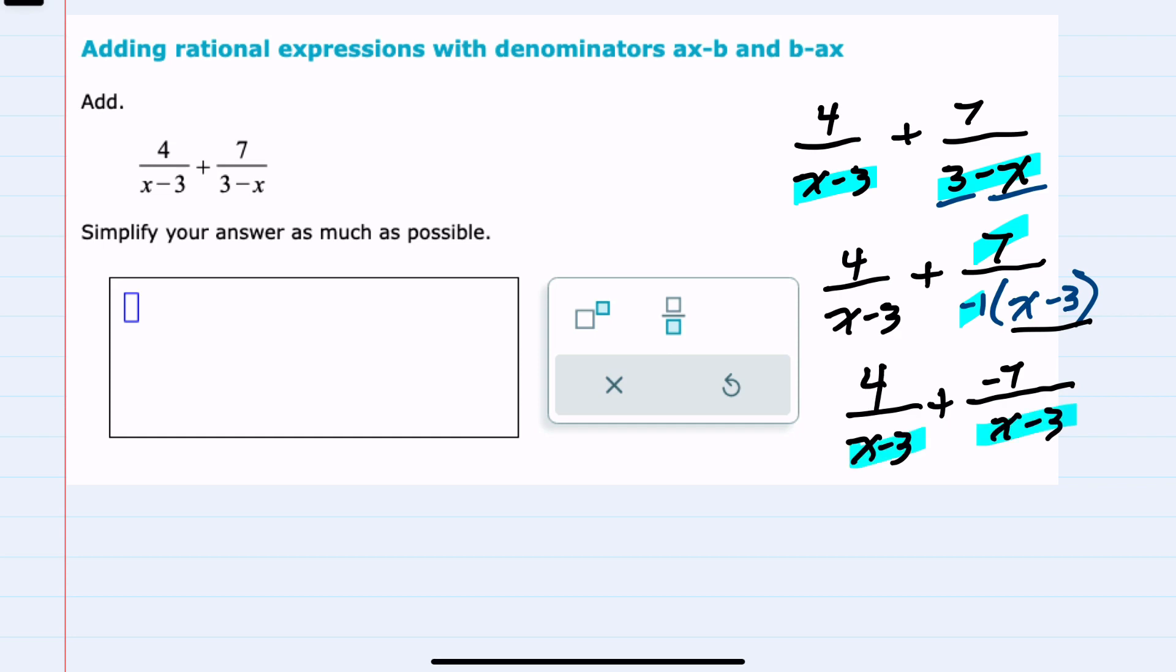We can combine these into a single fraction with x minus 3 as the denominator. My numerator would be 4 plus a negative 7, which is negative 3, and my denominator is x minus 3. This is our simplified solution after doing the addition.